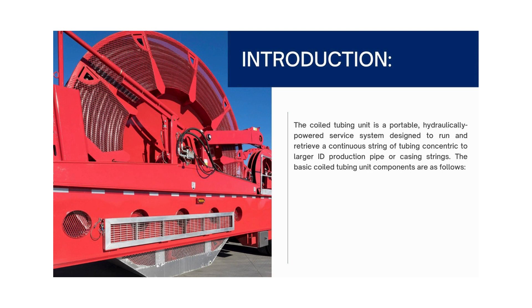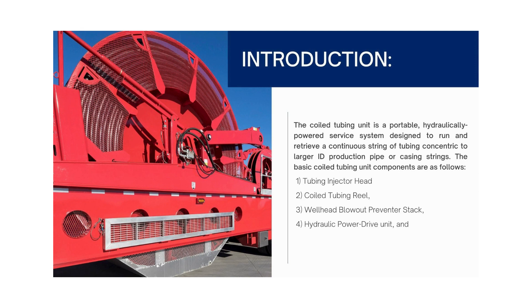The basic Coiled Tubing Unit components are: 1. Tubing Injector Head, 2. Coiled Tubing Reel, 3. Well Head Blowout Preventer Stack, 4. Hydraulic Power Drive Unit, and 5. Control Console.